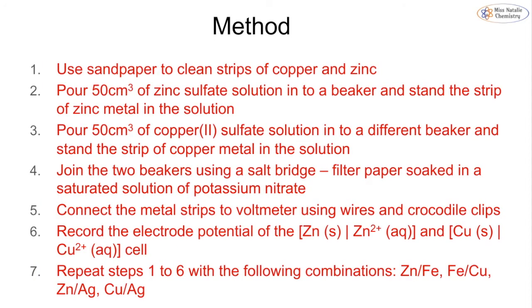How do we carry out this method to create this electrochemical cell? We're going to start off looking at the cell of copper and zinc. The first thing that we should do is we need to use sandpaper to clean the strips of the two metals. This is just to get rid of any oxide that's built up on the surface. We then pour 50 cm³ of our zinc sulfate solution into a beaker, and then we put the zinc metal into the solution. Using a different beaker, we then measure out 50 cm³ of our copper sulfate, and we put the strip of copper metal into it.